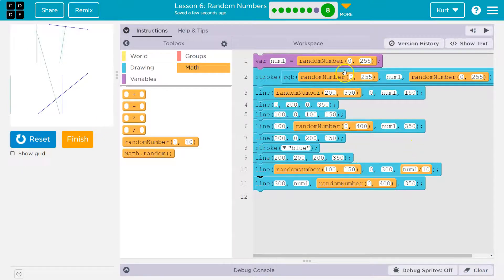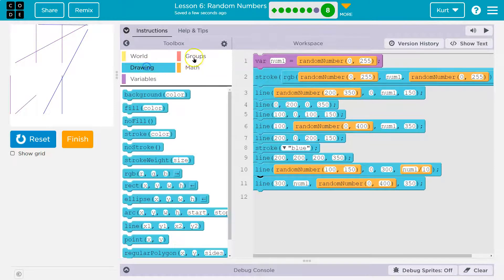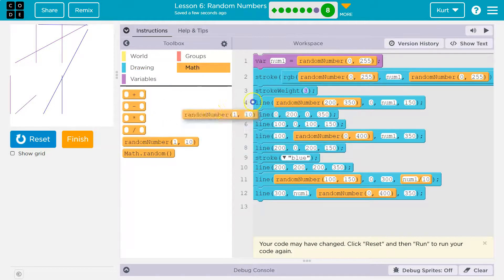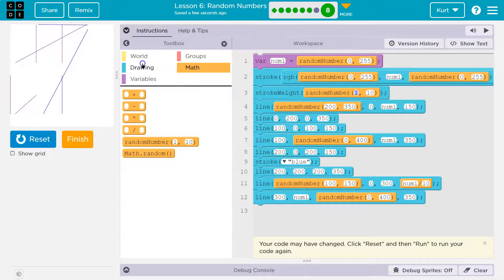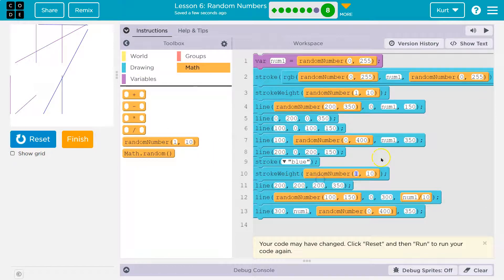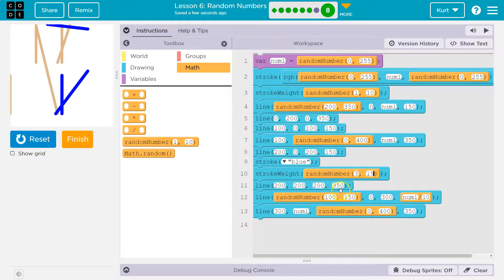This is cool. All right. And then I love this. All right. And then let's do stroke weight right here. And for that, I'll do another random number. 1 to 10 is fine. And then I want to do that twice though. This is fun. And we'll do 3 to 15.